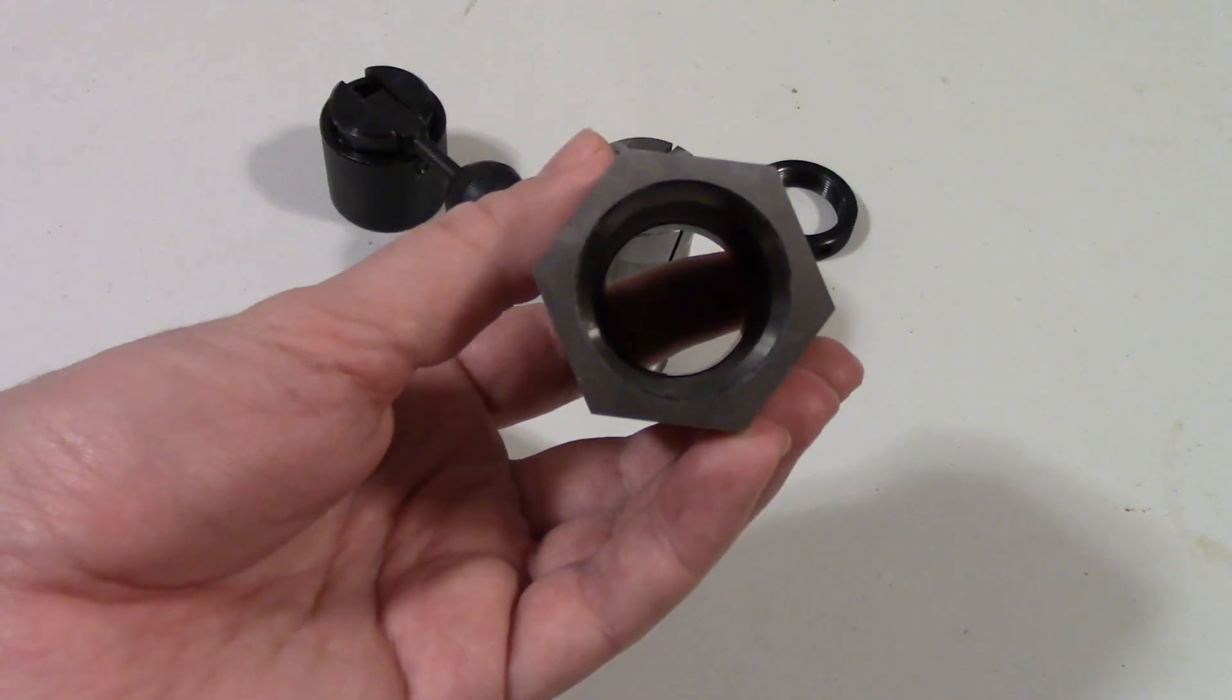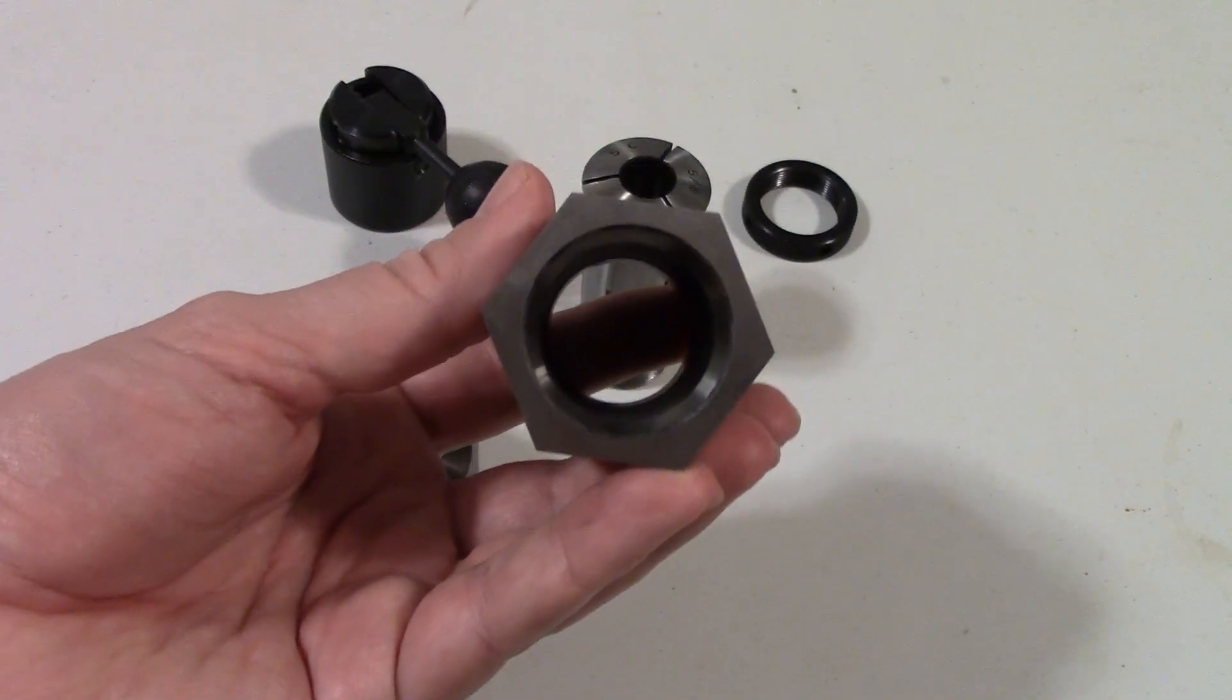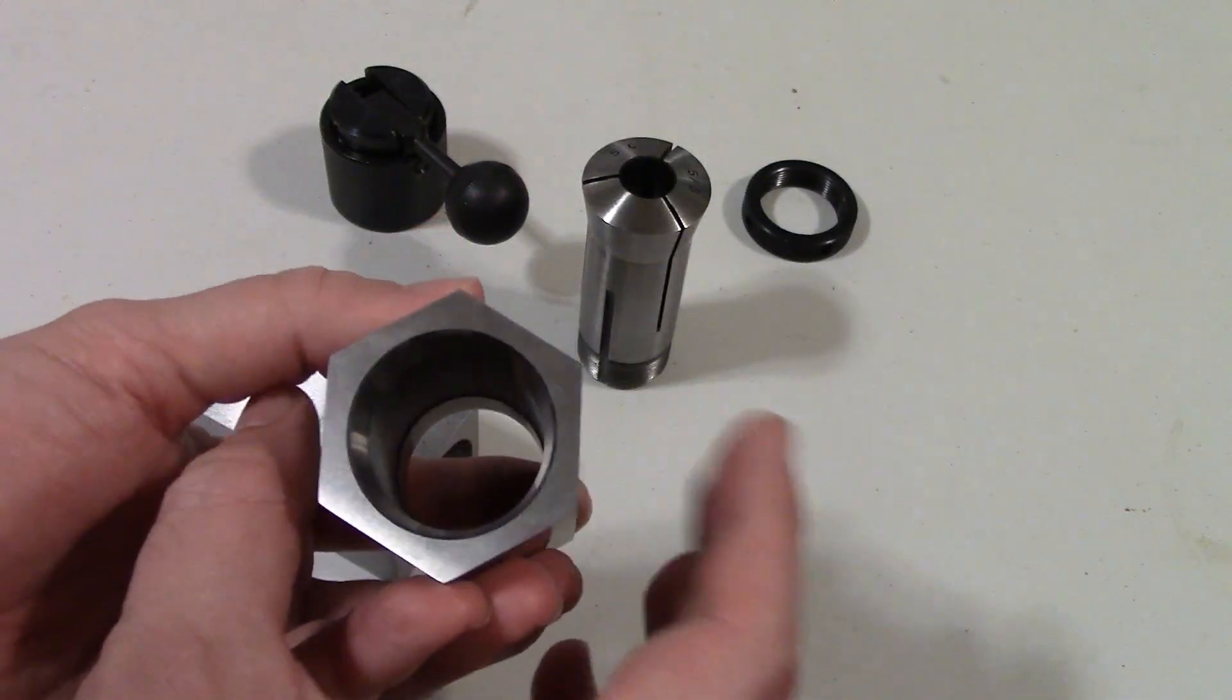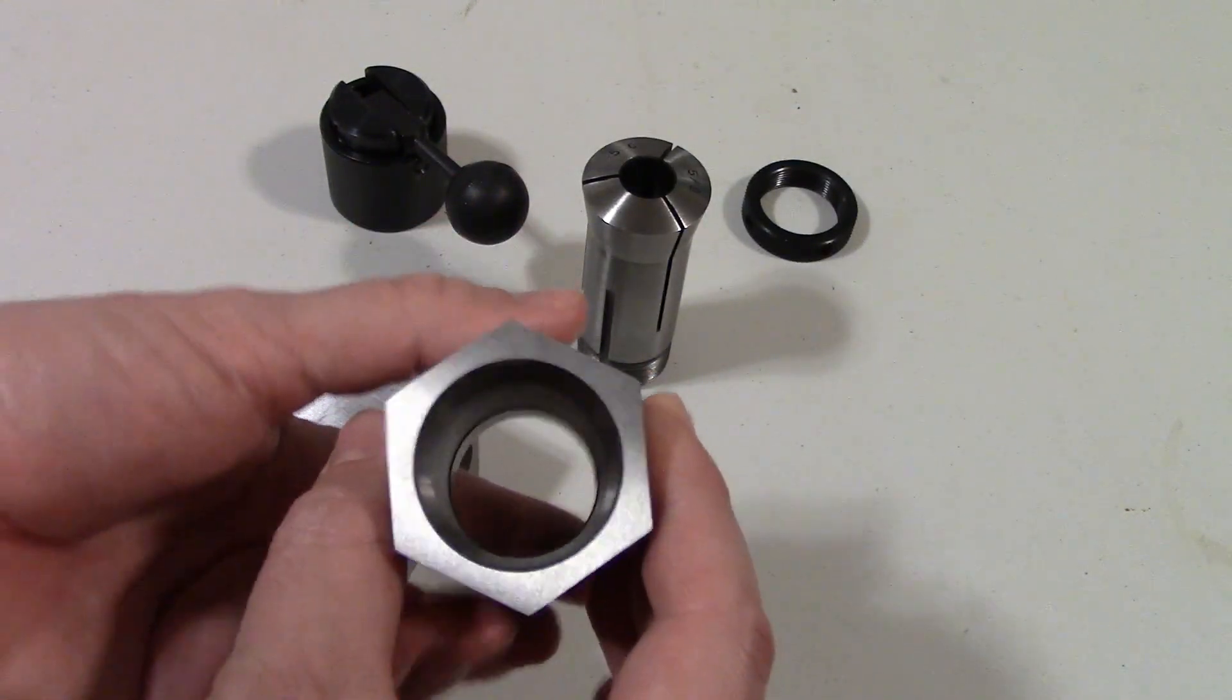The 6 sided block allows indexing for 2, 3, 6, or 12 sides depending on whether you grip the block on the flats or on the corners.